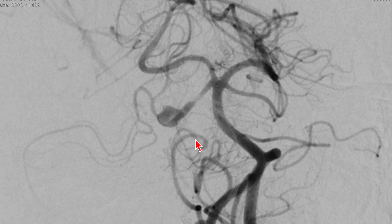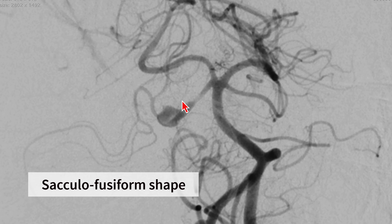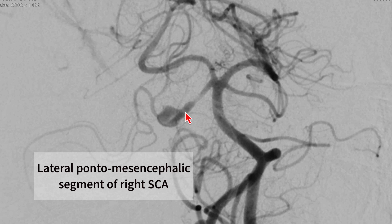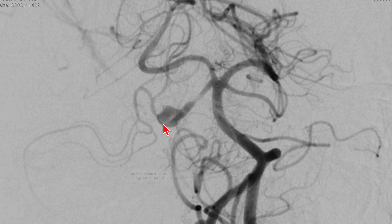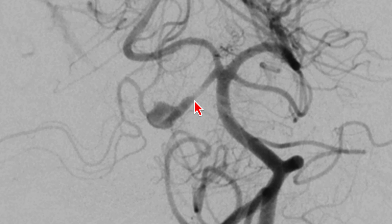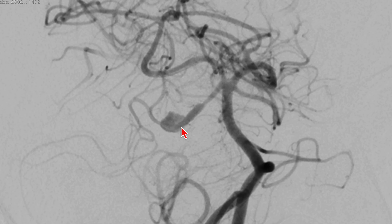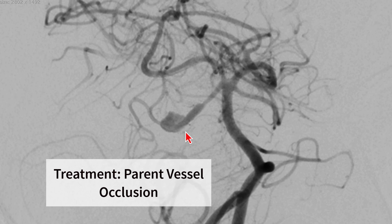This aneurysm is saccular-fusiform in shape and is involving the peripheral portion of the right superior cerebellar artery. At the junction of the proximal healthy segment and the distal aneurysm segment, there is a focal area of narrowing. This narrowing may represent the entry point of the intimal dissection, so we considered that parent vessel occlusion would be a safer option in this patient.